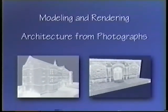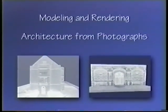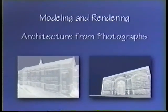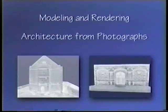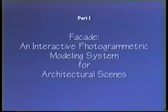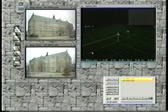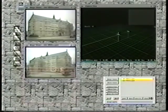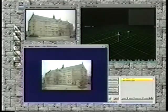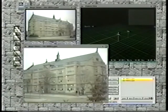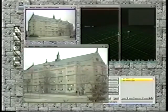In this video, we demonstrate the components of our approach to modeling and rendering architecture from photographs. The video has three parts. Facade is an interactive modeling system which is used to quickly and easily recover models of architectural scenes from photographs. In Facade, the user first loads in a few images of the architectural scene to be reconstructed. These two photographs of a high school building were taken with a calibrated 35mm camera from unknown locations.